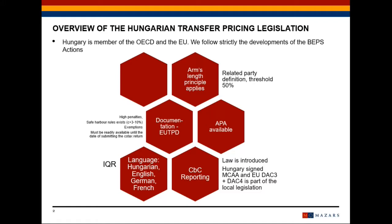Or there is a possibility to apply the EU TPD requirements. So if there is a master file available on group level, that can be used also for Hungarian transfer pricing purposes. The general rule is that all transactions must be documented. All qualifying agreements must be documented. However, there are some exemptions.